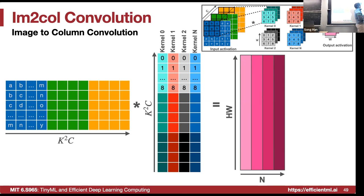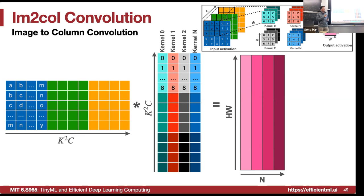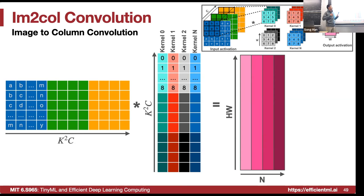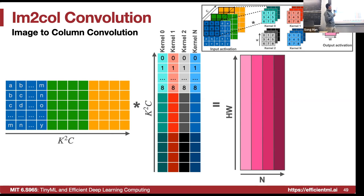There is a memory overhead: each input element contributes to nine different windows for a 3×3 kernel, making the im2col tensor nine times larger in memory. The solution is implicit GEMM — rather than materializing this expanded tensor in memory before computation, we calculate elements on the fly and directly access the original tensor using the index mapping between the im2col layout and the original tensor. This is from the torch.sparse paper and is a variant of direct convolution that operates directly on input weights without requiring nine times the memory.